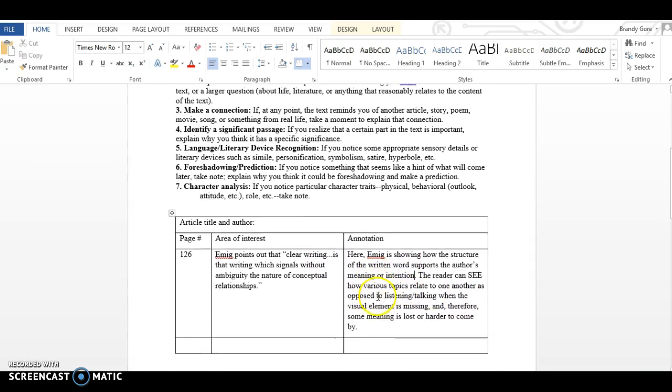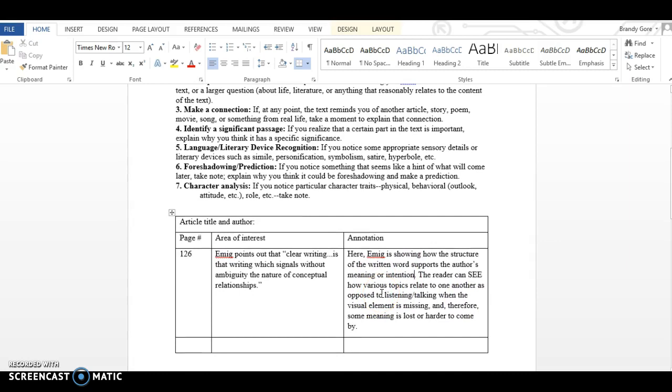Here's my comment: 'Emig is showing how the structure of the written word supports the author's meaning or intention. The reader can see how various topics relate to one another, as opposed to listening/talking when the visual element is missing and therefore some meaning is lost or harder to come by.' That is just my take on that particular point.